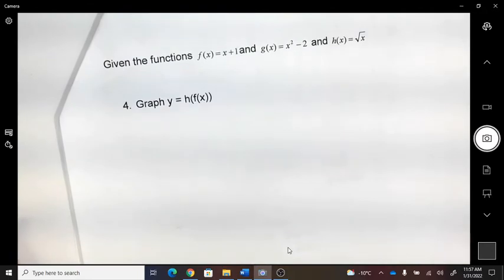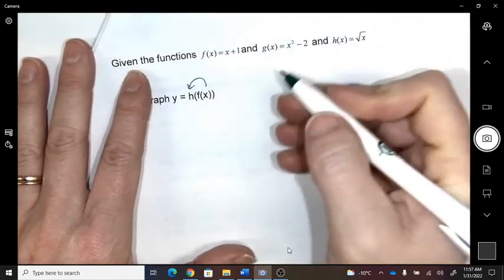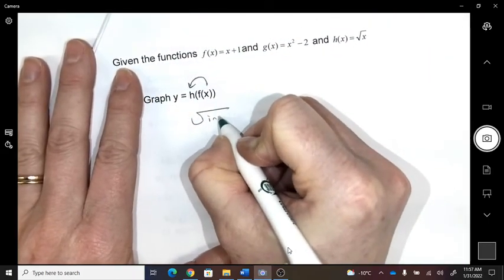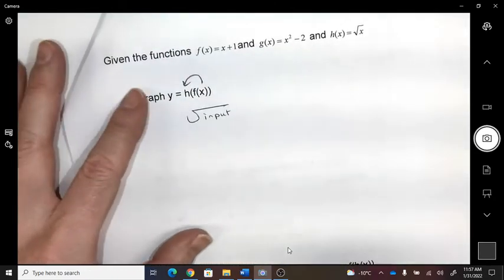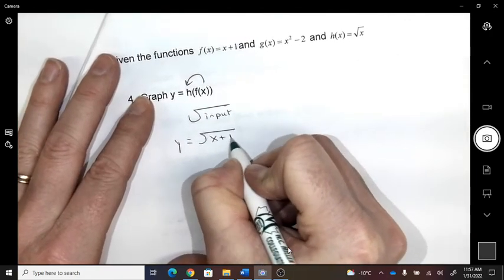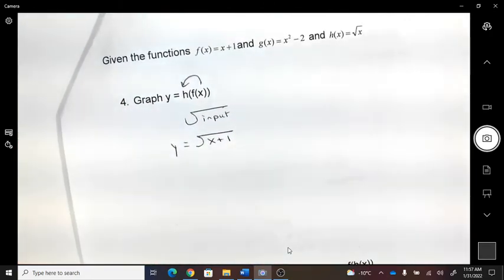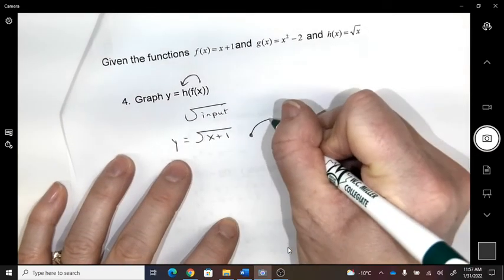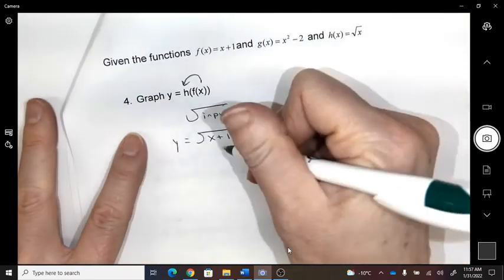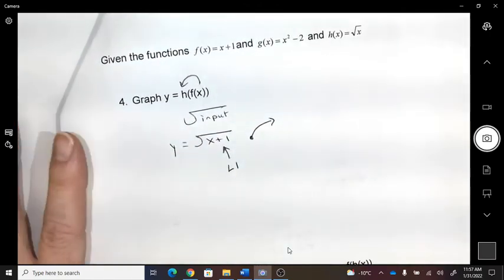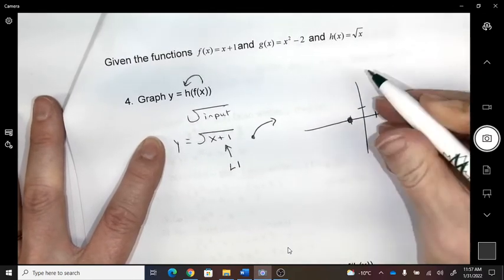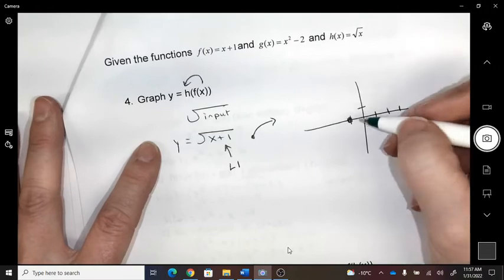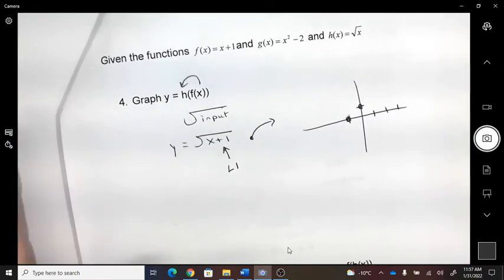Graph this composite. So I'm plugging the f function into the h function. So the h function is the square root of something. And now I'm inputting. So that's what I'm inputting. So this is a radical. So that's the shape of a radical. It has shifted left one. Now I'm going to go over one, up one. And then I'm going to go over four, up two.